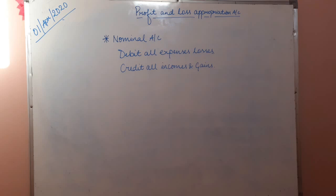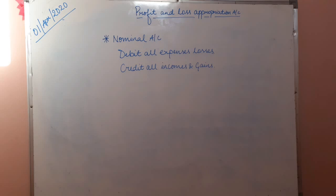Since P&L Appropriation Account is a nominal account: when interest on capital is given, it is an expense for the firm because the firm is paying interest on the capital invested by partners. Therefore it is recorded on the debit side, that is the left-hand side. On the other hand, interest on drawing — which the firm charges the partners who have withdrawn money — is income for the firm. That is why interest on drawing is recorded on the right-hand side, the credit side.